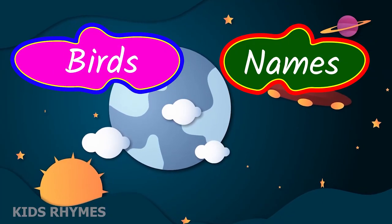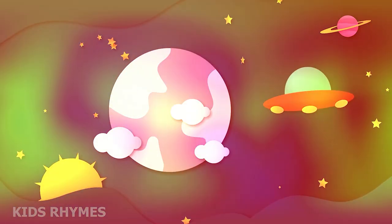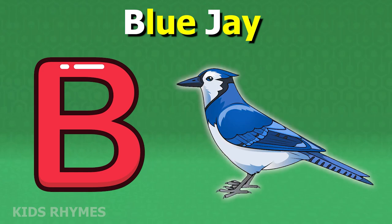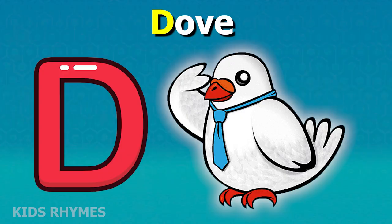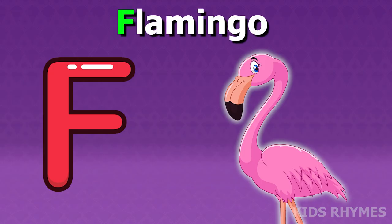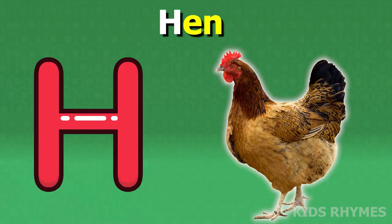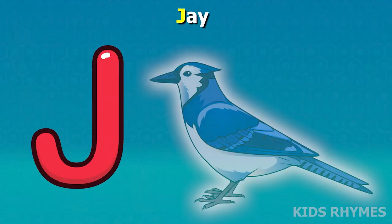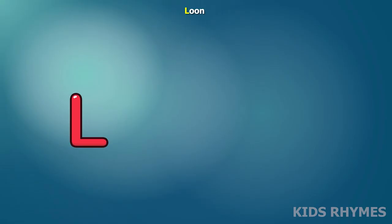Bird's name according to alphabet: A for albatross, B for blue jay, C for crow, D for dove, E for eagle, F for flamingo, G for goose, H for hen, I for ibis, J for jay, K for kingfisher, L for loon.